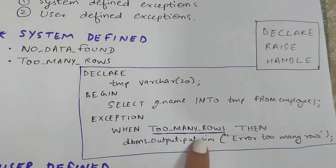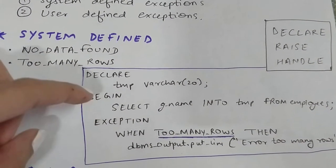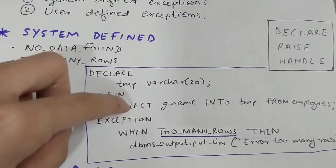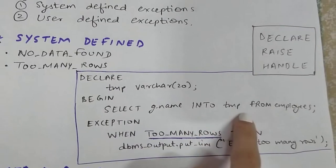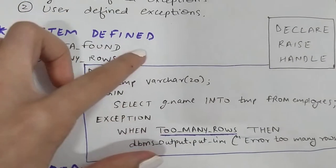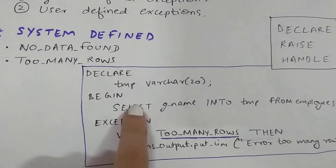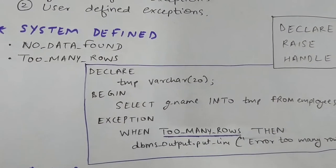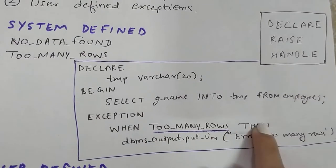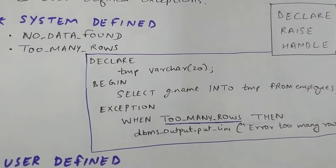In the EXCEPTION block we write WHEN TOO_MANY_ROWS — TOO_MANY_ROWS is already declared by Oracle, so you don't have to declare it yourself. If the query between BEGIN and EXCEPTION throws a TOO_MANY_ROWS error — which happens here because SELECT g_name INTO TMP FROM employees has no WHERE condition, so all names are selected into a single variable — that is an error condition. So the exception handler prints an error message: DBMS_OUTPUT.PUT_LINE('Error: Too many rows').